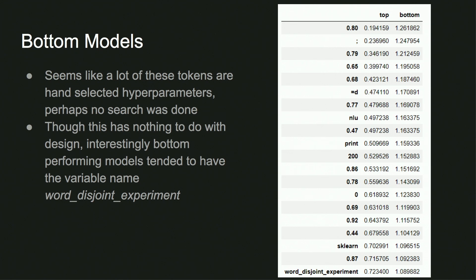Looking at the bottom performing models, there are a lot of numbers, which probably means that people hadn't picked hyperparameters. The variable name 'word disjoint experiment' appeared a lot more in the bottom submissions than in top submissions.